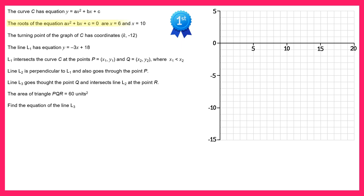We're told the roots of the equation ax squared plus bx plus c equals 0 are x equals 6 and x equals 10. Notice how the form of this equation exactly matches the form of the curve. This means that the curve must cross the x-axis at the two points x equals 6 and x equals 10, so let's mark those onto the diagram.